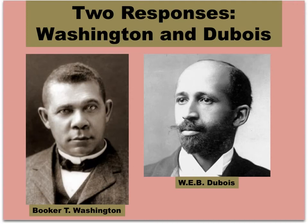Booker T. Washington was a proponent of agriculture and mechanical historically black universities. He also said that blacks should adopt the appearance and values of the white middle class — this would help them grow in economic power and eventually in political power — but there should be no political agitation. He expressed these ideas in an 1895 speech in Atlanta, known as the Atlanta Compromise speech, in which he basically says we need to learn trades and professions and get ahead economically. That's the best thing we could do for ourselves as African Americans, and we'll worry about the political stuff later.